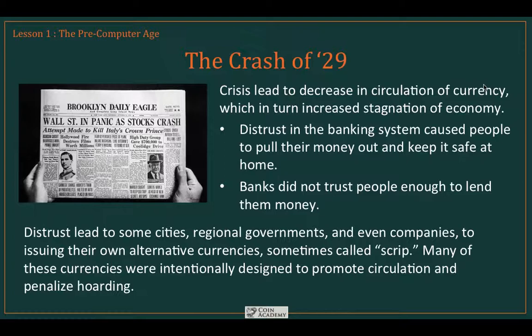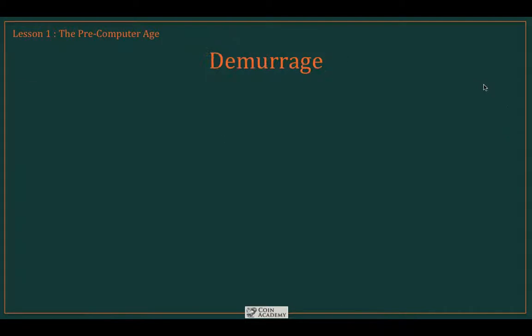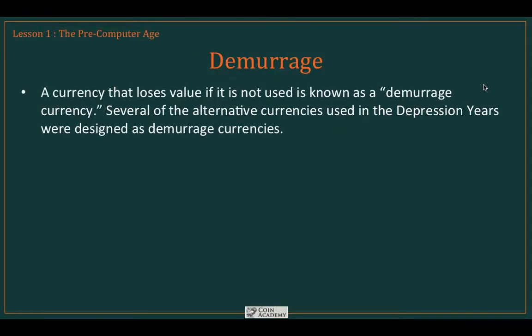This distrust also led to some cities, regional governments, and even companies issuing their own alternative currencies, sometimes called scrip. Many of these currencies were intentionally designed to promote circulation and to penalize hoarding. It was a direct reaction to the decrease in the circulation of the primary fiat currency, particularly in the United States and major countries in Europe. When a currency loses its value if it's not used, it's known as a demurrage currency. Several of the alternative currencies used in the Depression years were designed as demurrage currencies.